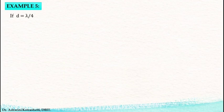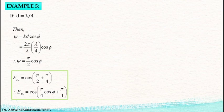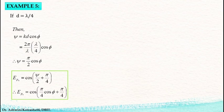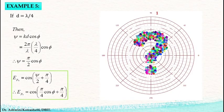I would like you to look at another example where the distance of separation is λ/4. In this case ψ = π/2 · cos φ, and the normalized electric field becomes cos(π/4 · cos φ + π/4). As an exercise, please tabulate the electric field for values of φ from 0 to 360 degrees and plot the radiation pattern.